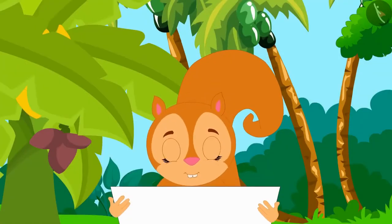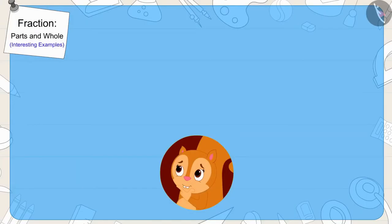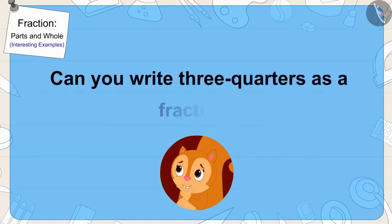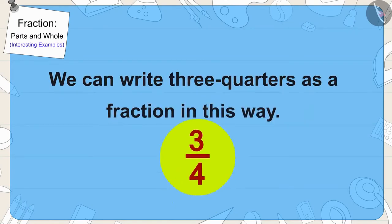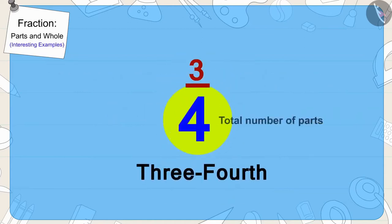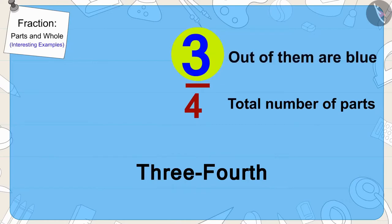She quickly read the letter further. It was written that first Chanda will have to find a window whose three-fourth glass is blue. Children, can you write three quarters as a fraction? Yes, we can write three quarters as a fraction in this way. The number four shows that our whole is divided into four equal parts, and three parts out of them are blue.